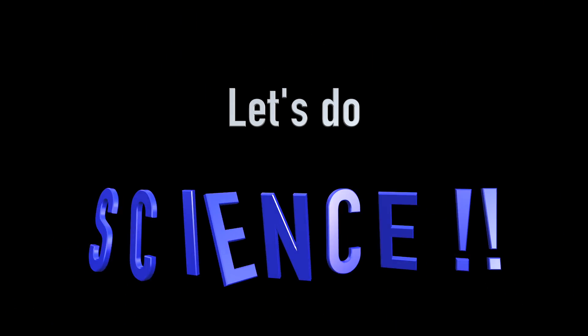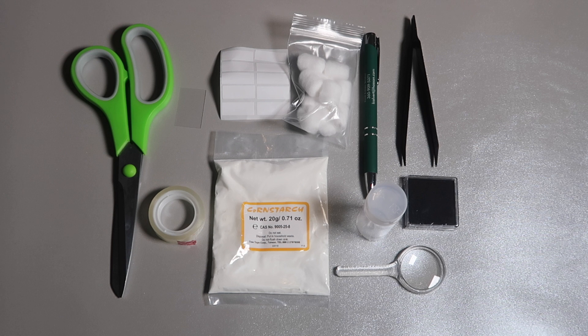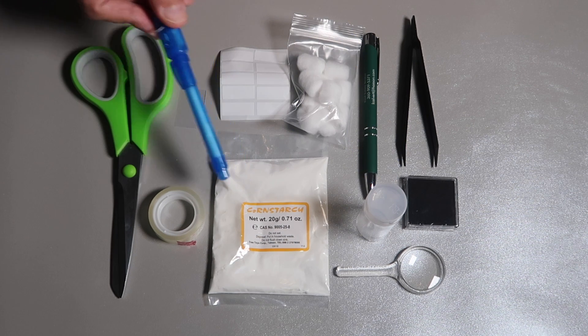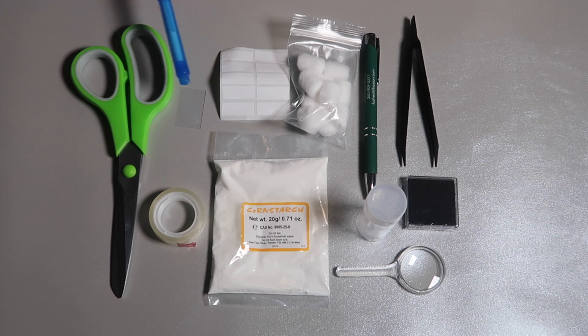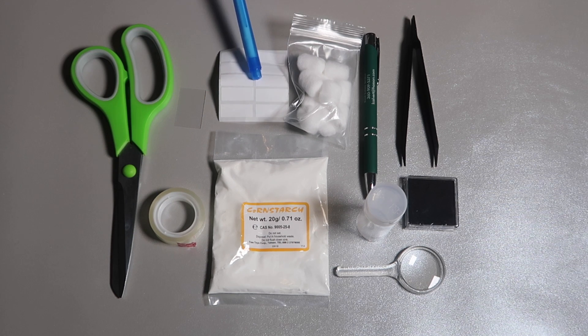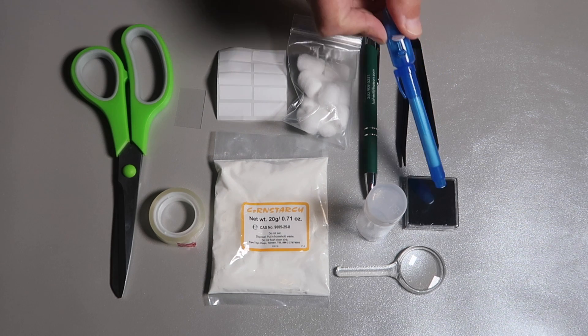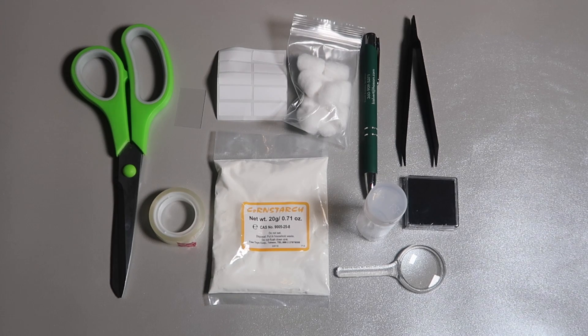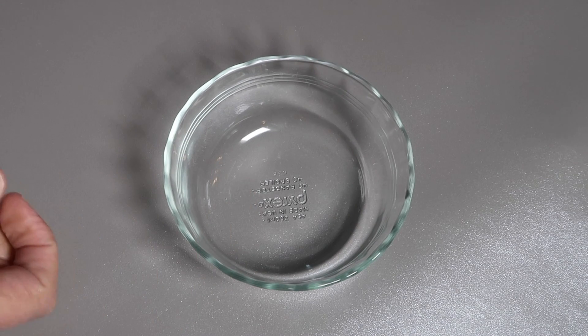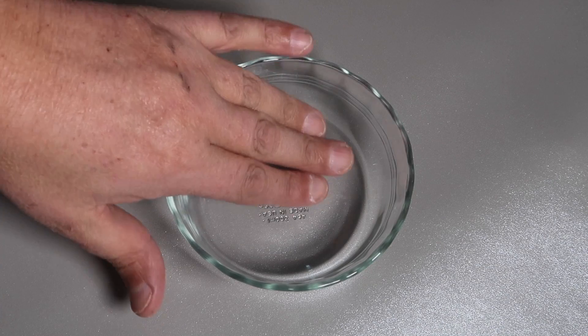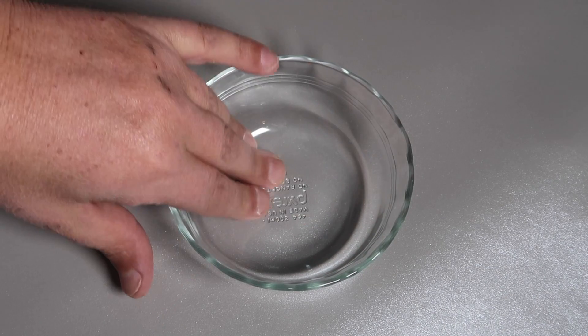So let's do some science. For this, we need a test tube, a bag of cornstarch, sticky tape, scissors, plastic slide, some sticky labels, cotton buds, pen, tweezers, the ink pad, and the magnifying glass. I'm going to use this Pyrex bowl as the crime scene, which maybe would normally be a mirror or a glass. And then I'm going to leave some fingerprints.